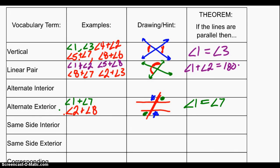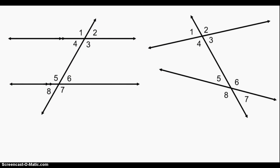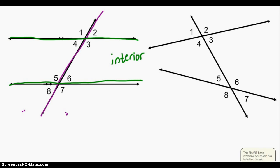Now, alternate interior angles are very similar. Again, alternate interior angles will be on alternate sides of the transversal — on two opposite sides — but now they're on the interior of the two parallel lines. Think of it almost like a sandwich — you're in the interior. Alternate interior angles might be something like six and four: they're on opposite sides of the transversal and interior to those two green lines. And it's going to be three and five — they're on the interior of the two parallel lines and on alternating sides of our transversal.